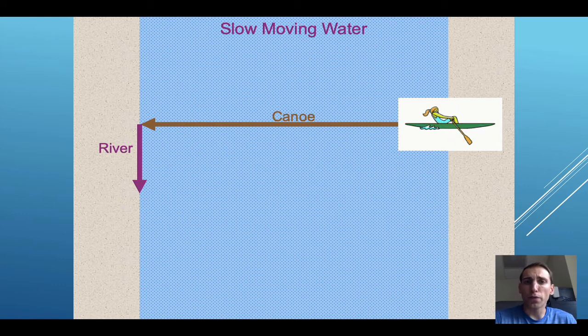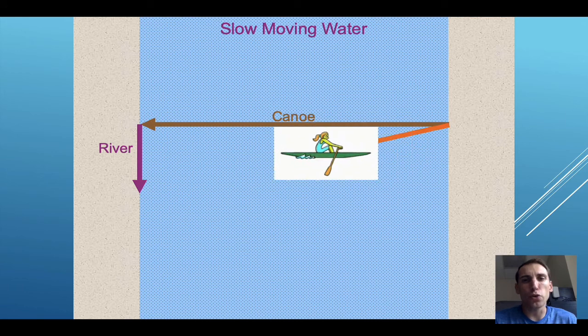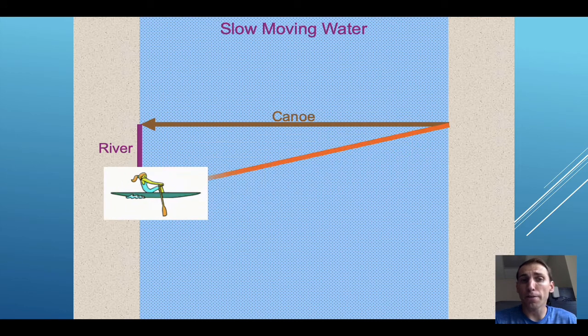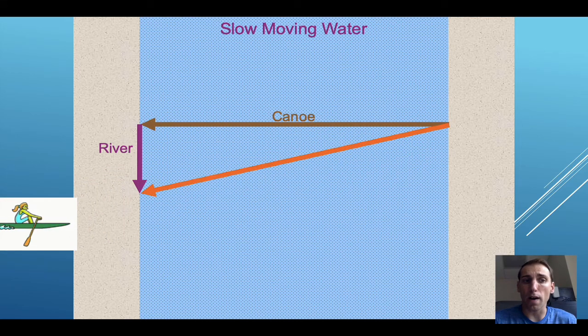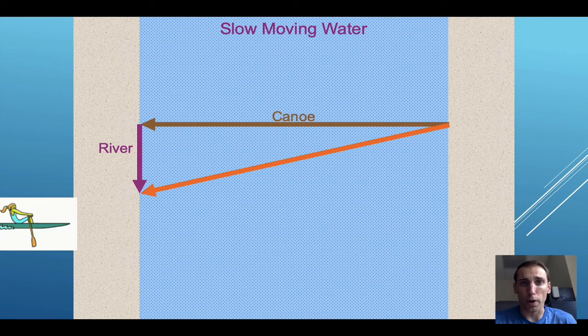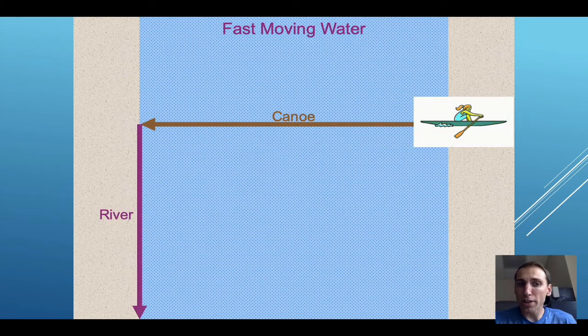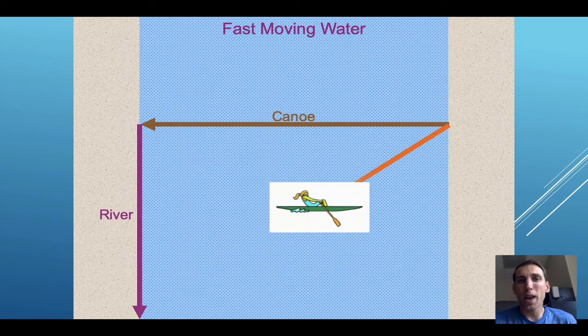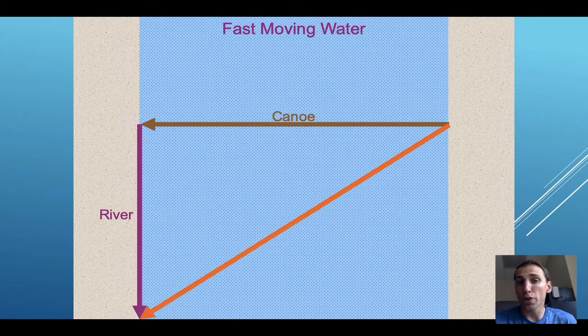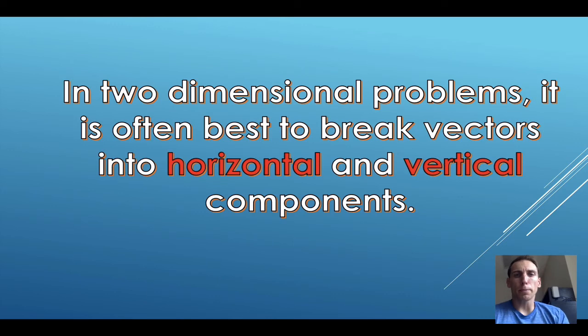If instead, that boat is facing across the river, but there is some current, we would add those two velocity vectors together to find the overall velocity of that boat with respect to the shore. If the current's moving faster, we end up with a larger resultant vector that points in a different direction. This isn't going to come up too frequently.